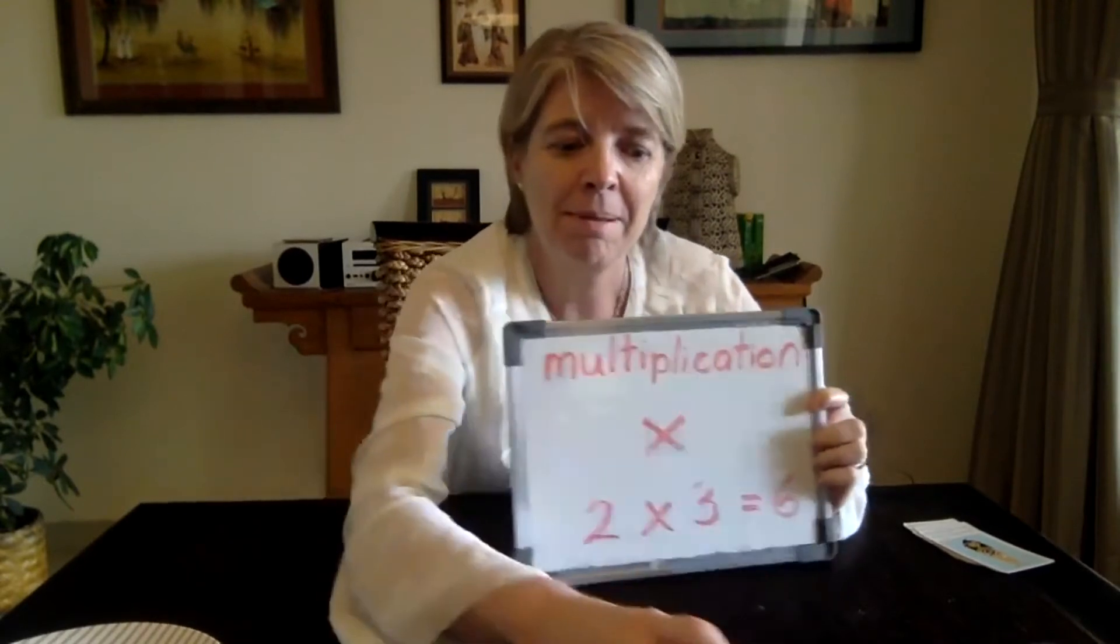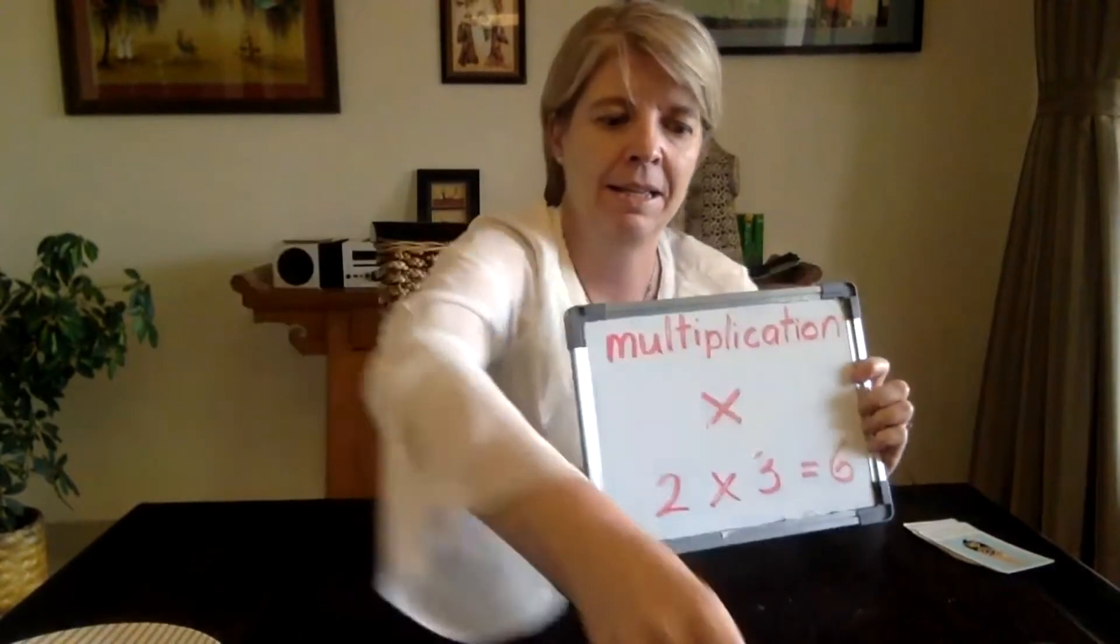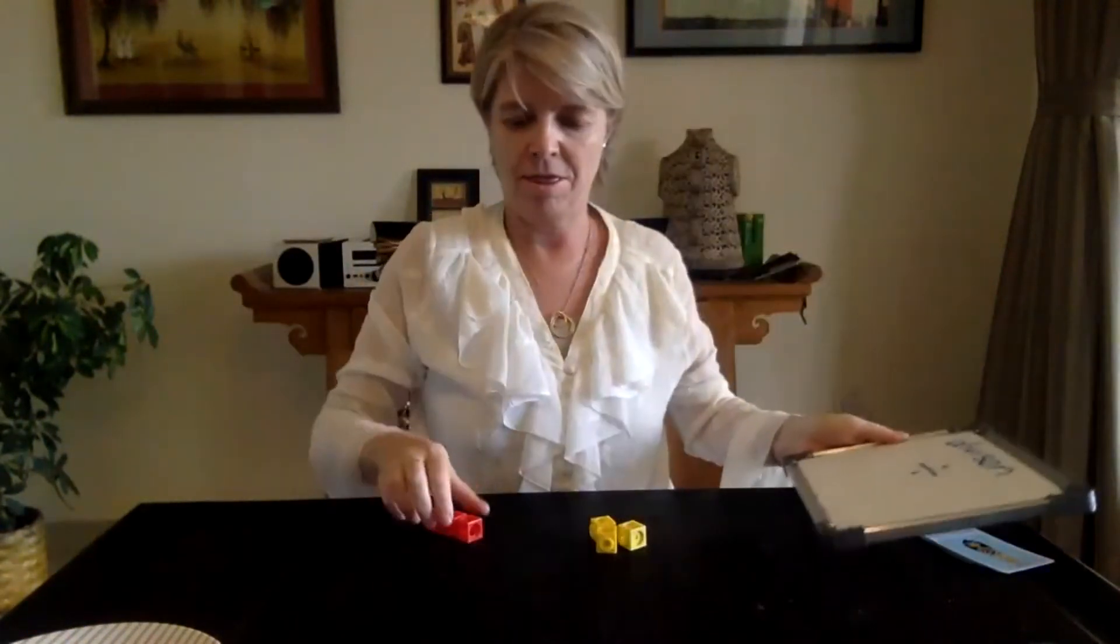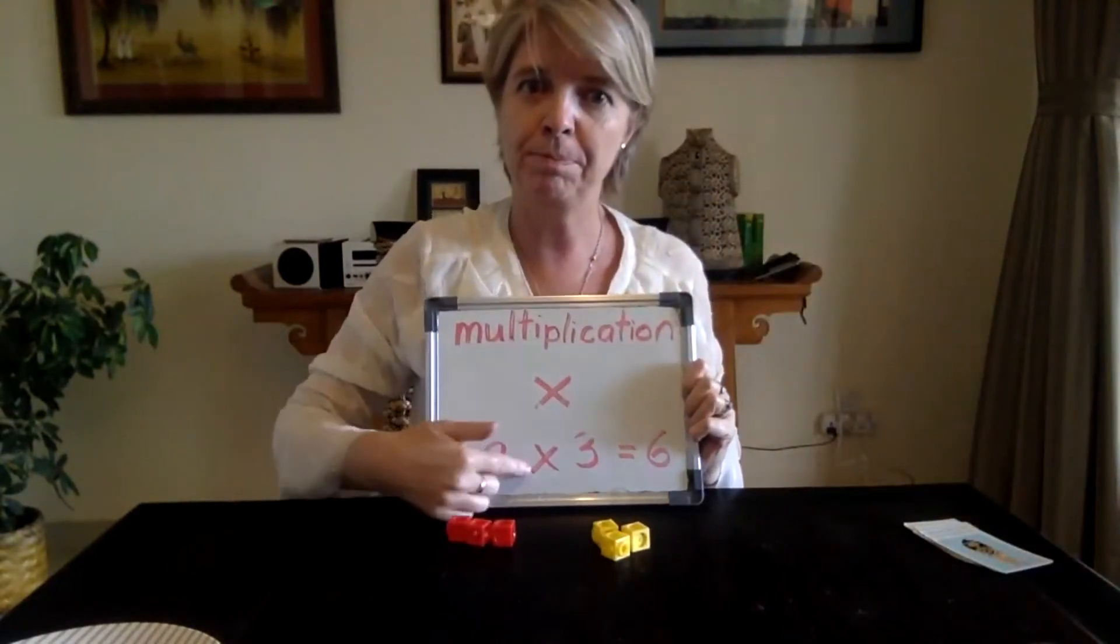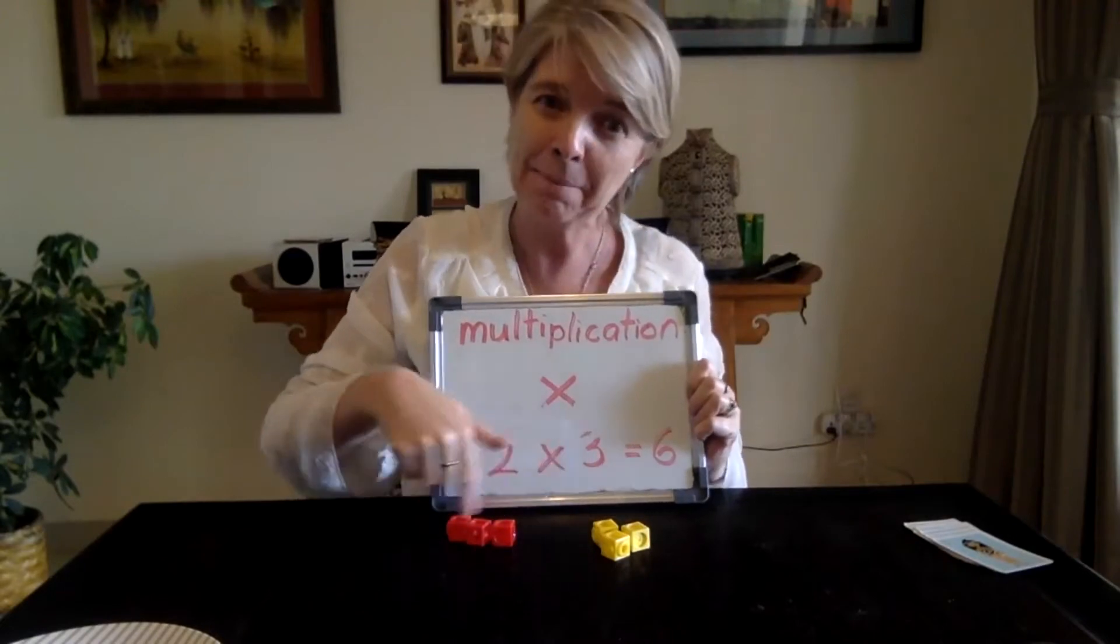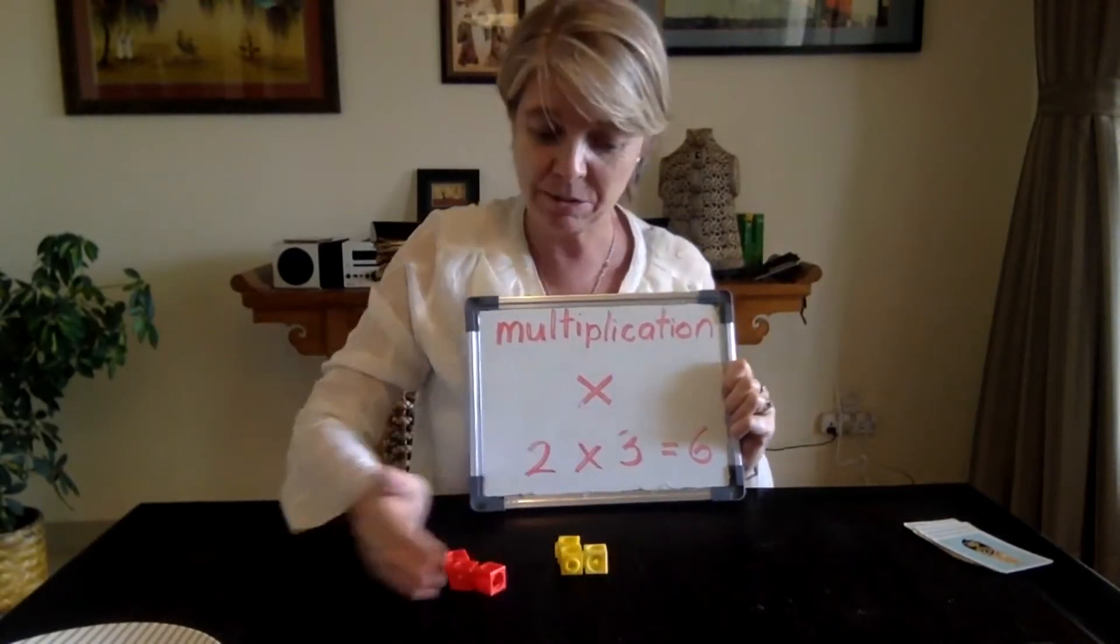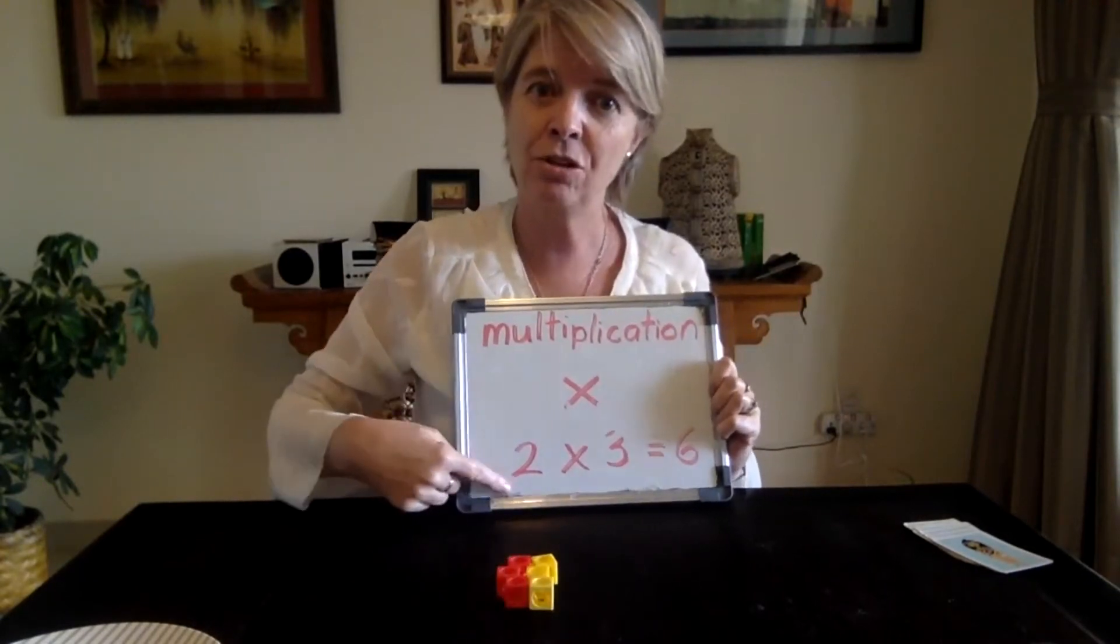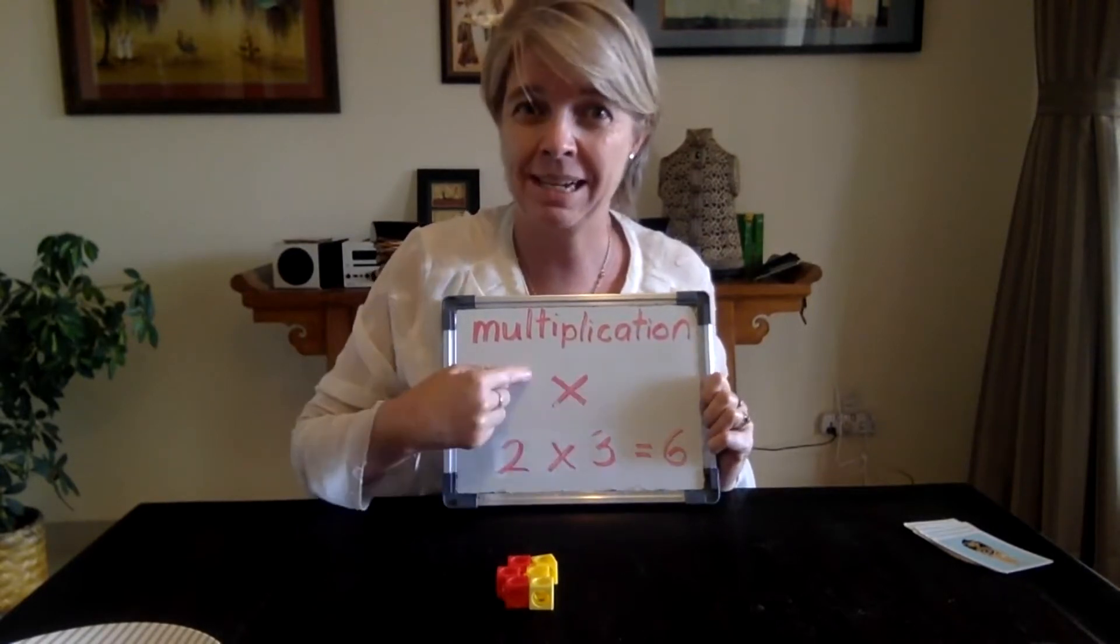So remember I had three and three. So two groups of three. How many would I have together? It was easy, wasn't it? Because we put them together and we counted and we were able to say two times three equals six. That's multiplication.